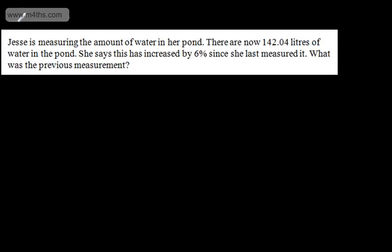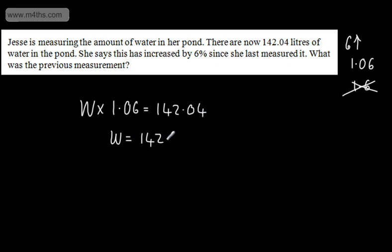We'll try one more. Jessie is measuring the amount of water in her pond. There are now 142.04 litres of water in the pond. She says this has increased by 6% since she last measured it. What was the previous measurement? So what I'm going to say then is that the water multiplied by, if it's a 6% increase, we are increasing our multiply will be 1.06. Don't fall into a trap of writing 1.6. That is 60%. So our water multiplied by 1.06 gave us 142.04. So the amount of water that was in there originally is 142.04 divided by 1.06.